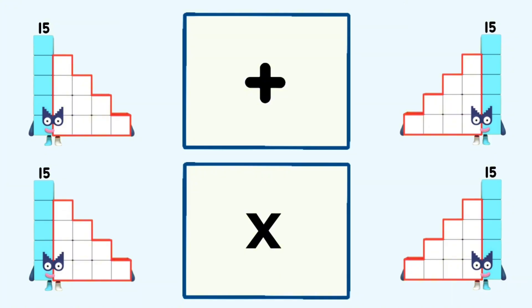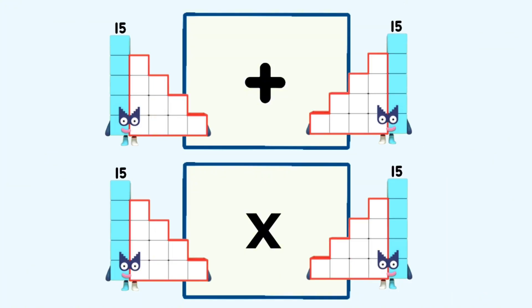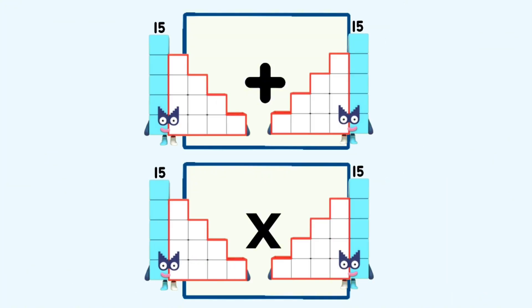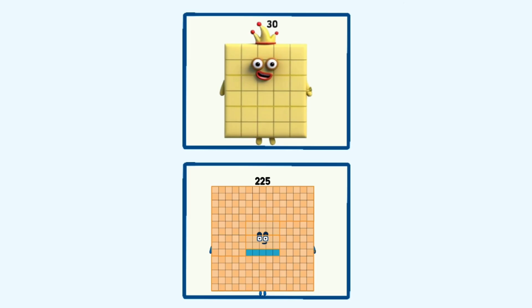15 plus 15 and 15 times 15 equals 30 and 225.